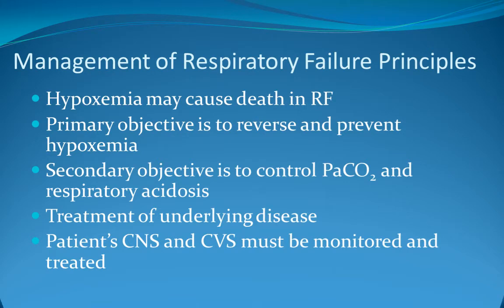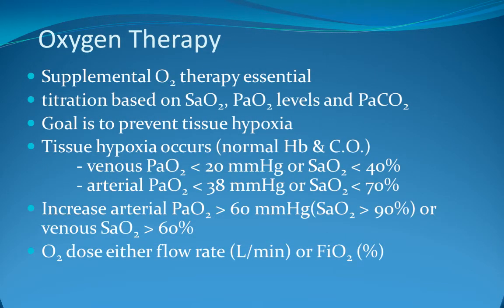The principles of managing respiratory failure: hypoxemia may cause death, so the primary objective is to reverse and prevent hypoxemia. The secondary objective is to control PCO2 and respiratory acidosis, and to treat the underlying disease. The patient's CNS and CVS must be monitored and treated throughout. Treat the underlying disease, give oxygen therapy 35-60% with a face mask to correct hypoxia. Assisted ventilation is indicated when PO2 is less than 8 kPa despite 60% oxygen.